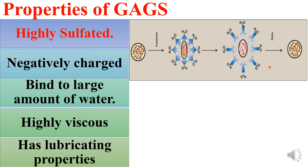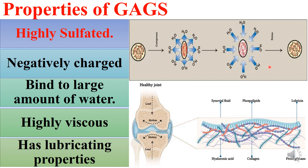In synovial joints, a healthy joint has synovial fluid composed of various glycosaminoglycans and other components. In osteoarthritis, millions of individuals suffer because of joint cartilage degradation. The proteoglycans that normally provide a cushion are lost, minimizing the resilience of the cartilage and causing pain and swelling with progressive worsening of signs and symptoms.